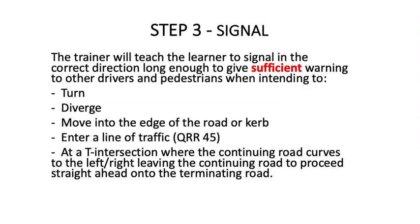Step three: signal. The trainer will teach the learner to signal in the correct direction long enough to give sufficient warning to other drivers and pedestrians when intending to turn, diverge, move into the edge of the road or curb, enter a line of traffic at a T-section where the continuing road curves left or right, or when leaving the continuing road to proceed straight ahead onto the terminating road.